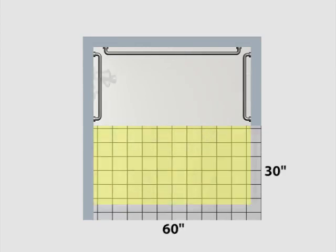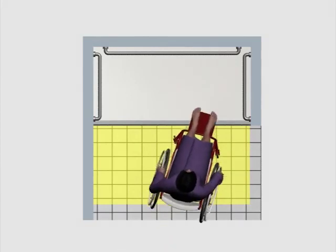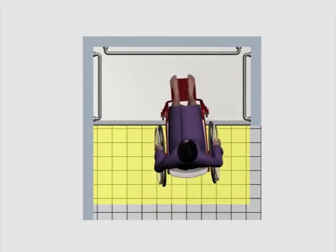Clear floor space in front of the shower at least 30 inches by 60 inches provides room to maneuver into and out of the stall and for turning.